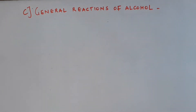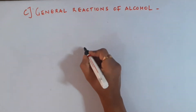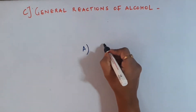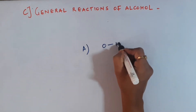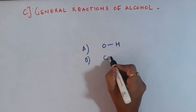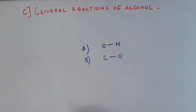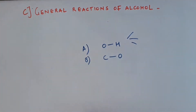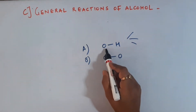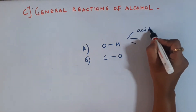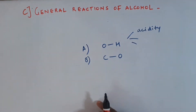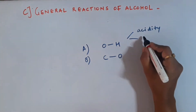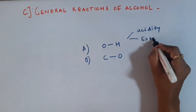Hello everyone. Today we are going to start with the reactions of alcohols, the third category of reactions. The first two reactions which we have already discussed were: the first one involved the cleavage of the oxygen-hydrogen bond, and the second involved the cleavage of the carbon-oxygen bond. In the first case we saw reactions about the acidity of alcohols, and the second reaction was esterification of alcohols.